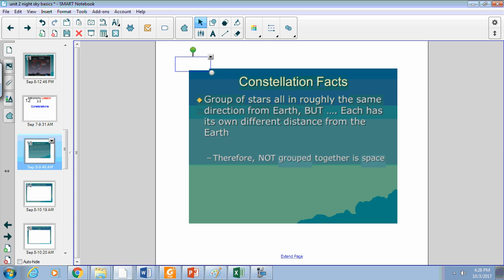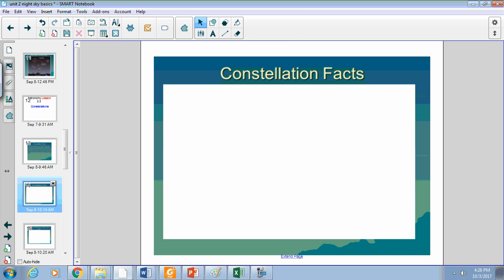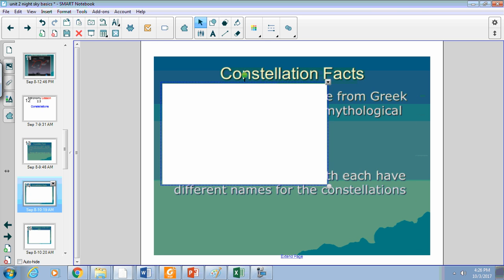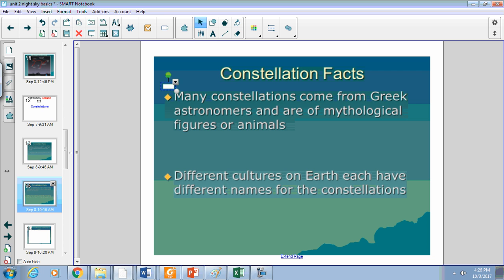Most of these constellations are Greek, at least have Greek legends in them, but not all. Some are more modern like Telescopium and Microscopium and Sextant, but many are Greek like Perseus and Pisces. Many are based on mythological figures.